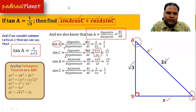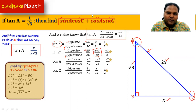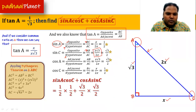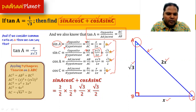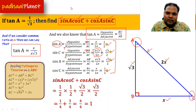Now we have all four values: sin(A) = 1/2, cos(C) = 1/2, cos(A) = √3/2, and sin(C) = √3/2. We put all of them into the expression sin(A)cos(C) + cos(A)sin(C). That gives us (1/2)(1/2) + (√3/2)(√3/2) = 1/4 + 3/4 = 4/4 = 1. So the final answer is 1.